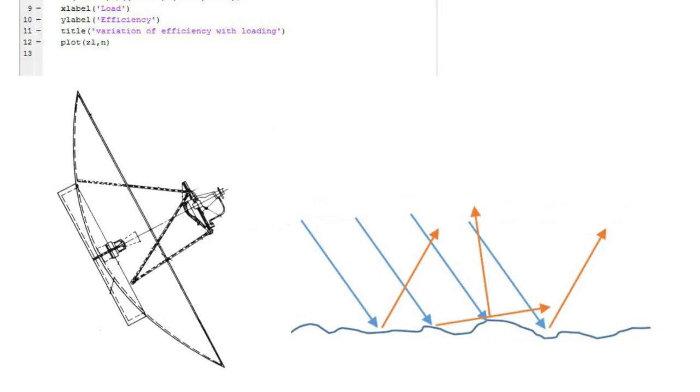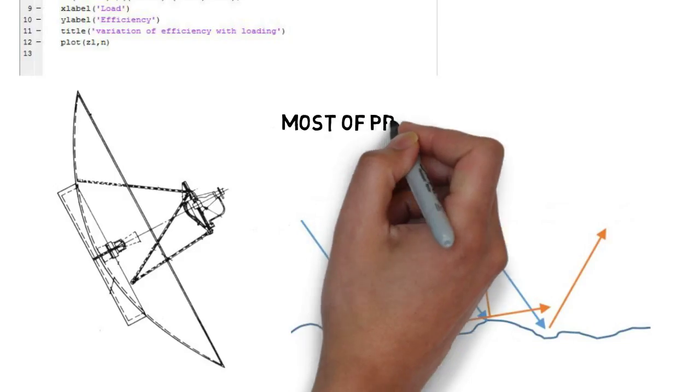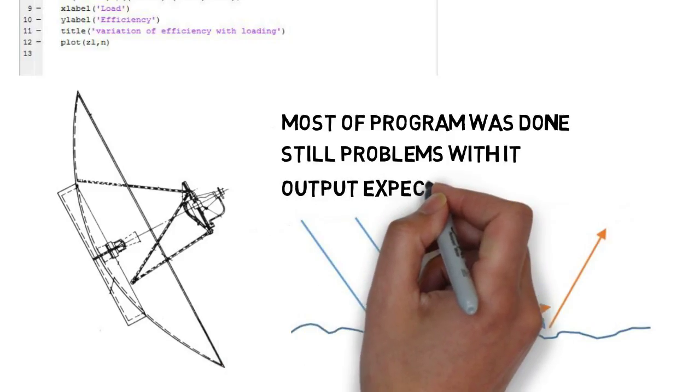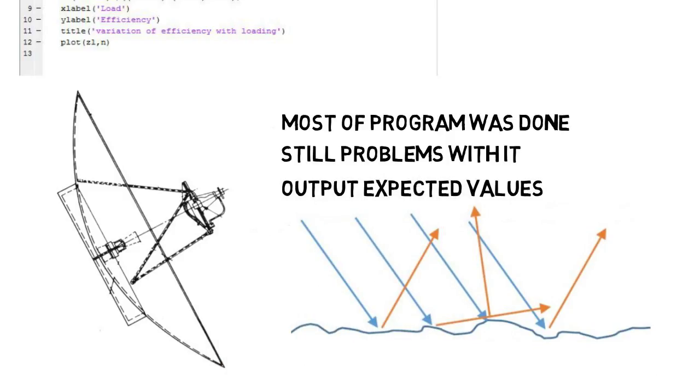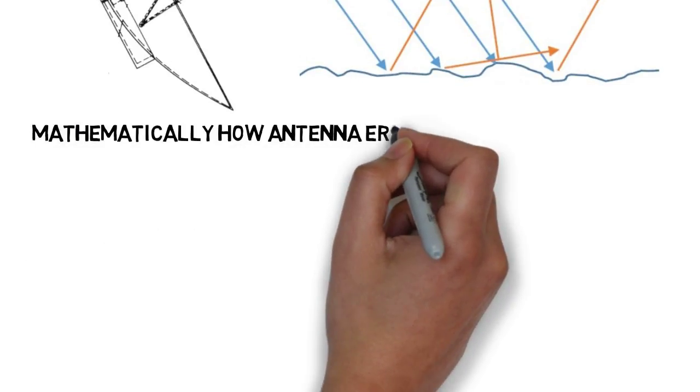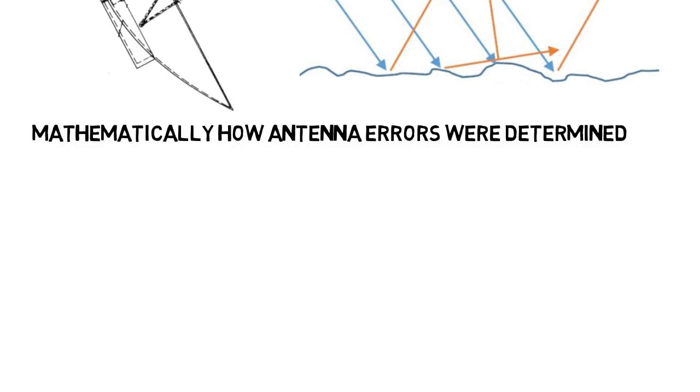I did not make the program from scratch. Most of it was done by the time I started working on it, but there were still problems I had to fix. We had data where we knew what the output was supposed to be, so I had to keep tweaking the program until it spit out those expected values. I also had to read articles about mathematically how antenna errors were determined, which is what the program was based on.